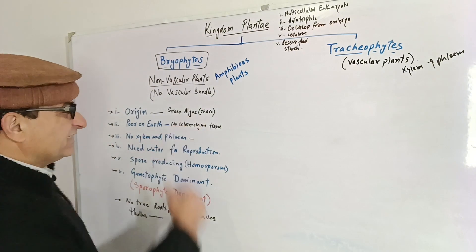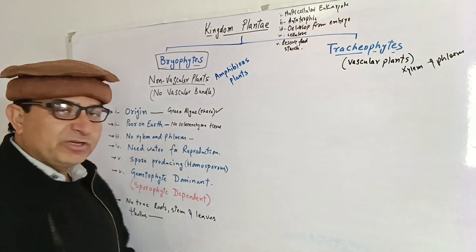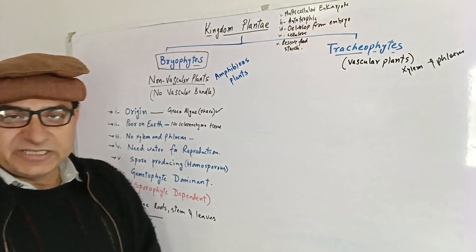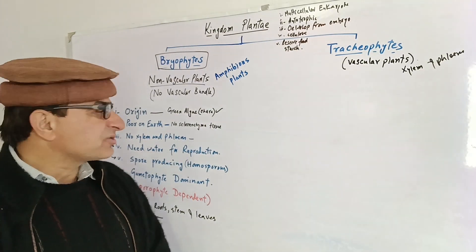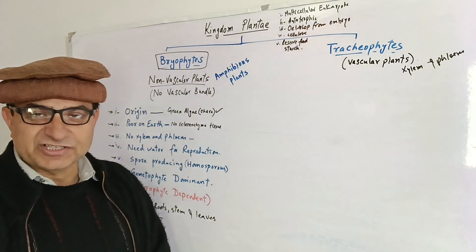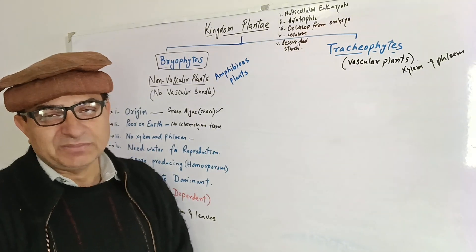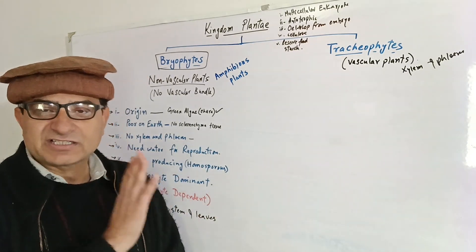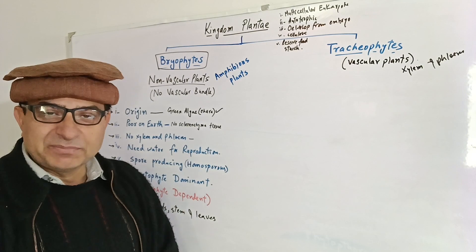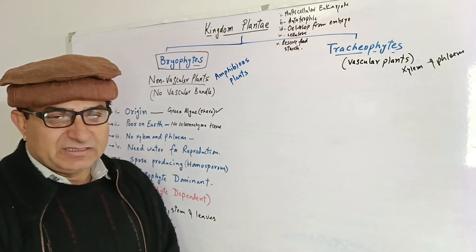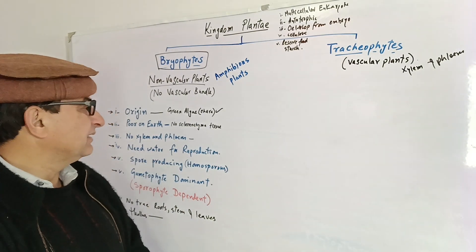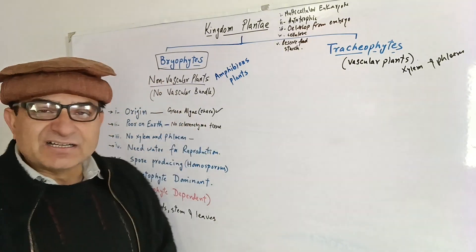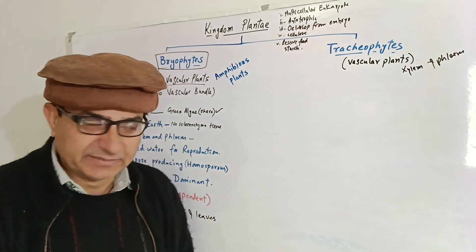Bryophytes have their origin from green algae, which evolved in the water. Green algae are the plant-like algae with the maximum characteristics of plants — they have cell walls like green plants, they have pigments, they have preserved food, and other plant characteristics. So bryophytes have their origin from green algae, and this can be the connecting link between the kingdoms.